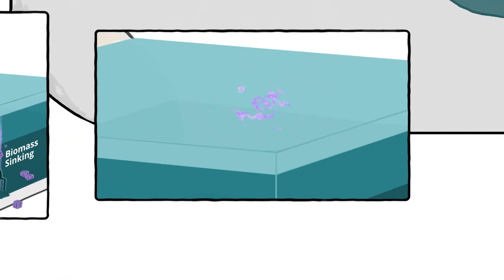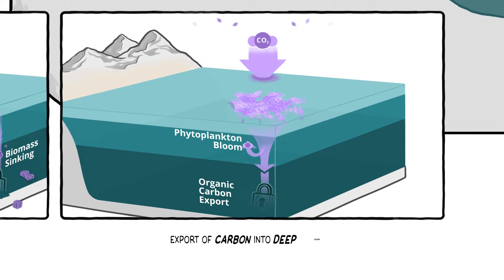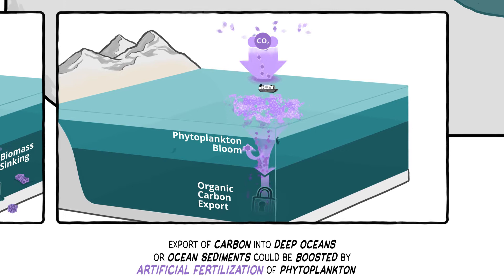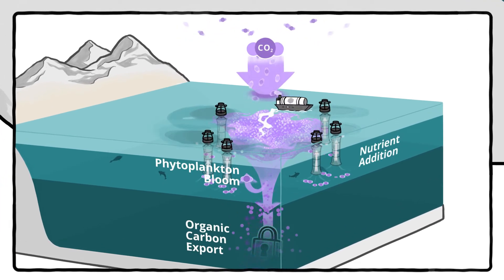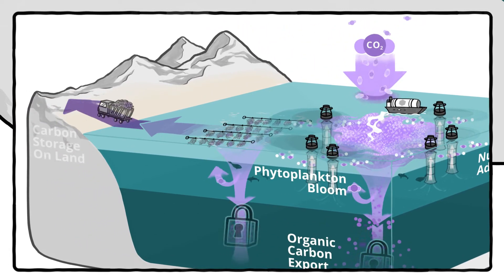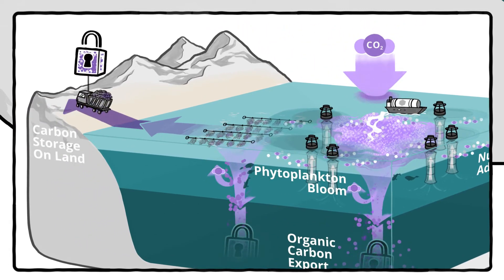In nutrient-poor waters, the export of carbon to the deep ocean could be boosted by artificial fertilization of phytoplankton, either directly with the help of ships or planes, or by artificial upwelling of deeper nutrient-rich waters. Such fertilization could also enhance the growth of seaweed.